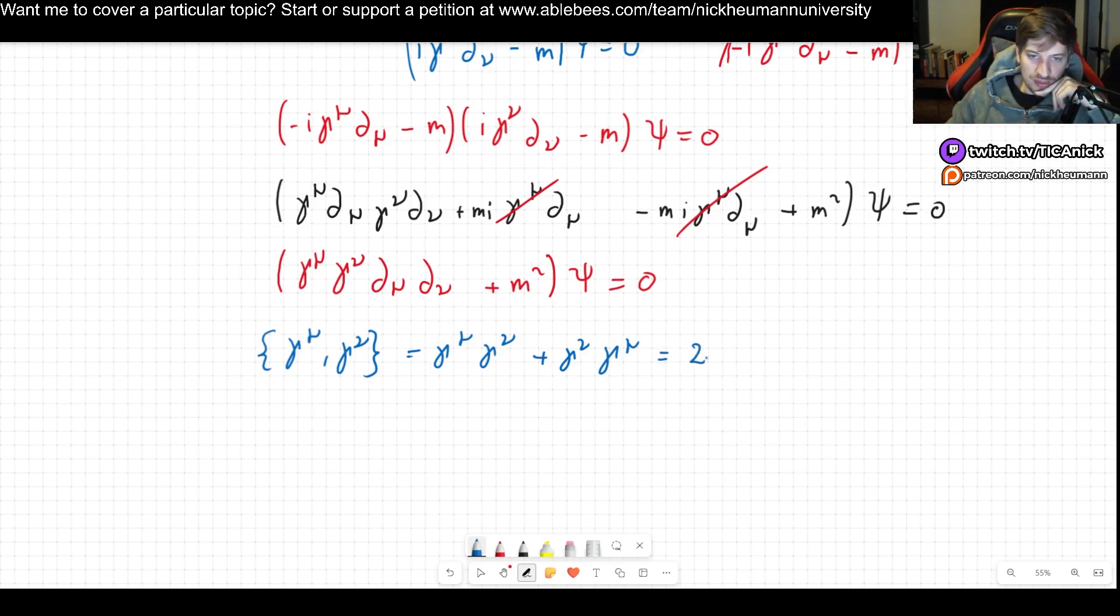This is equal to two times our metric mu nu. And this of course is in a four by four space. This is implied when I'm doing this. This implies multiplication here by a four by four unit matrix. So why is this important? Well I have a gamma mu gamma nu.